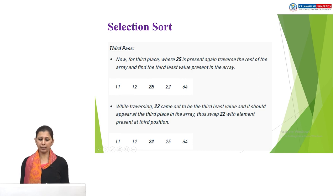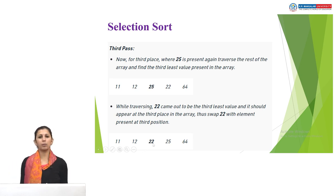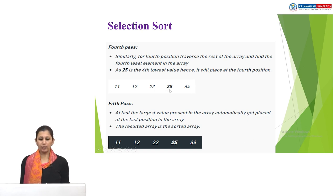In the third pass, I check with 25 against 22 — 25 is not less than 22, so 22 becomes the minimum. Then 22 is less than 64, so 22 remains the minimum. I swap 22 with 25. In the next pass, 25 is compared with 64 — 25 is less than 64 and there are no further elements, so no swapping is required. This gives us the final sorted array.